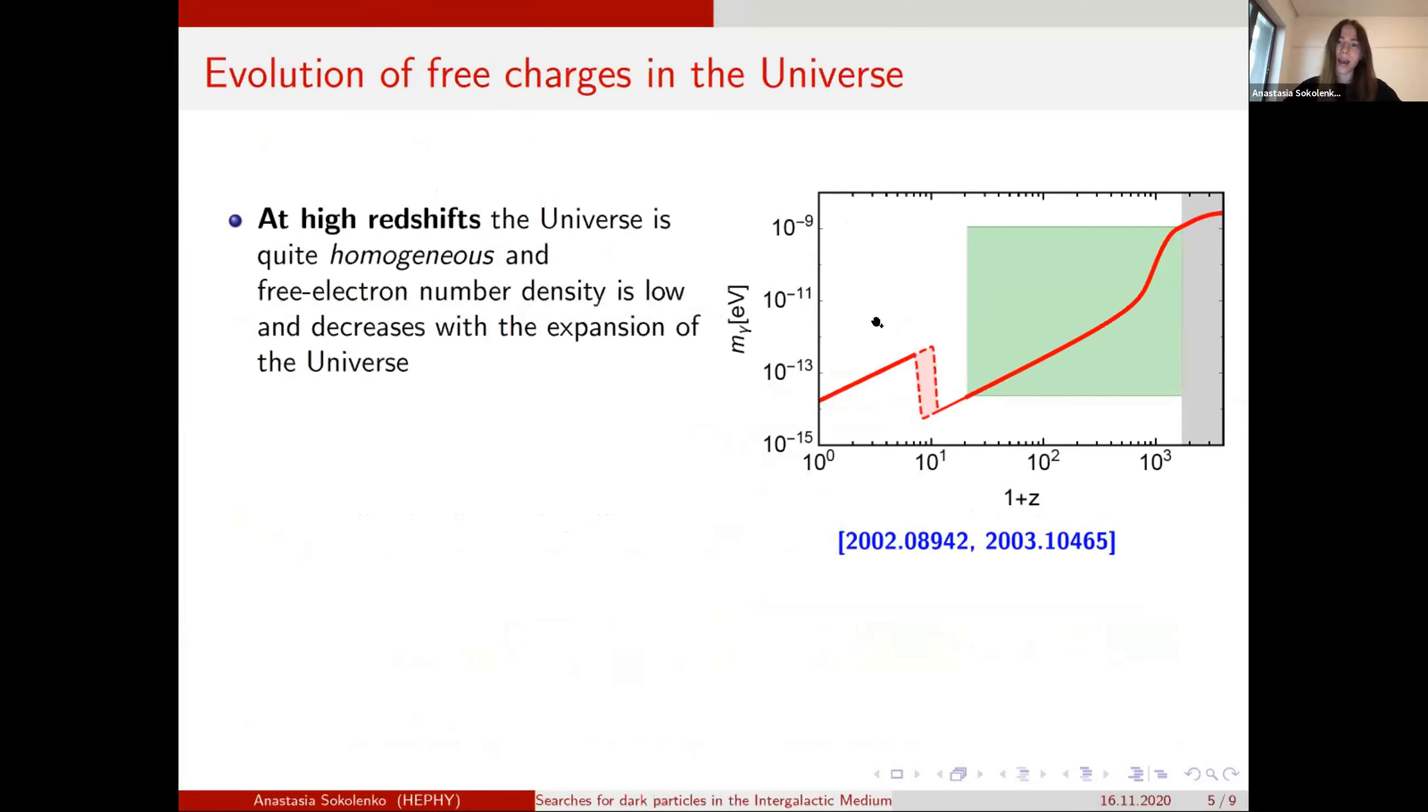So starting from a very high redshift, after the CMB decoupling, our universe is homogeneous. And what is even more interesting for us, it's neutral up to some extent, but we do have some small fraction of free electrons. And therefore, the effective mass that is proportional to the square root of electron number density decreases with the expansion of the universe, because the number density decreases as well.